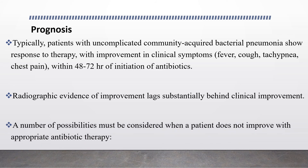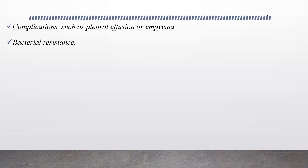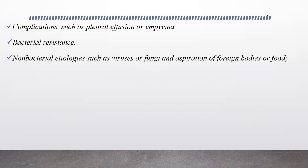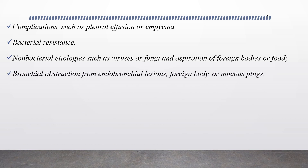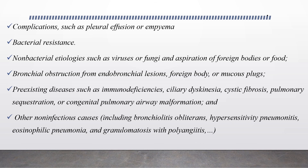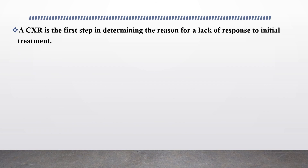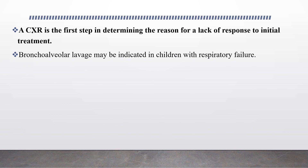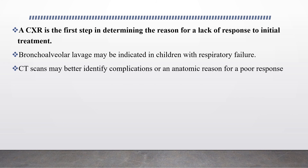A number of possibilities must be considered when a patient does not improve with appropriate antibiotic therapy: complications such as pleural effusion or empyema, bacterial resistance, non-bacterial etiologies such as viruses, fungus, or aspiration of foreign bodies or food, bronchial obstruction from endobronchial lesion, foreign bodies or mucus plugs, and pre-existing diseases such as immunodeficiency, ciliary dyskinesia, cystic fibrosis, or congenital lung malformations such as pulmonary sequestration or congenital pulmonary airway malformation. Non-infectious causes such as bronchiolitis obliterans, hypersensitivity pneumonitis, eosinophilic pneumonia, or granulomatosis should also be suspected. A chest X-ray is the first step; bronchoscopy or CT scan may better identify complications or anatomic reasons for poor response.